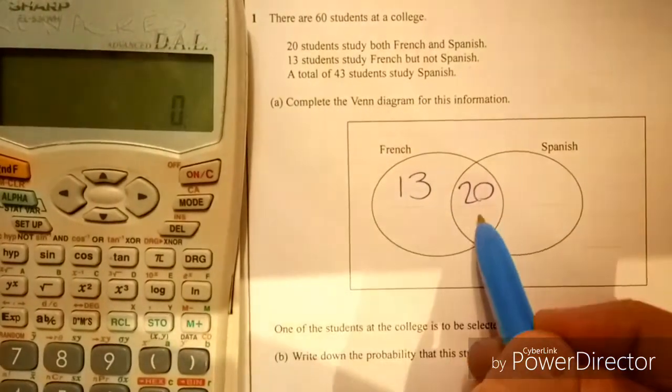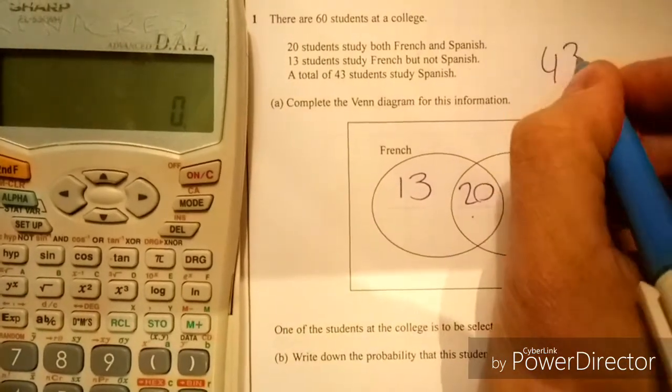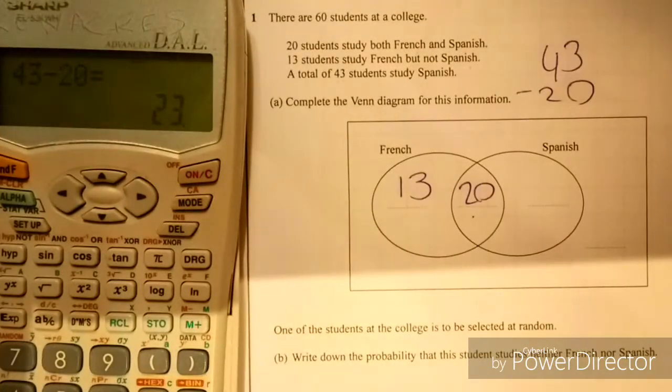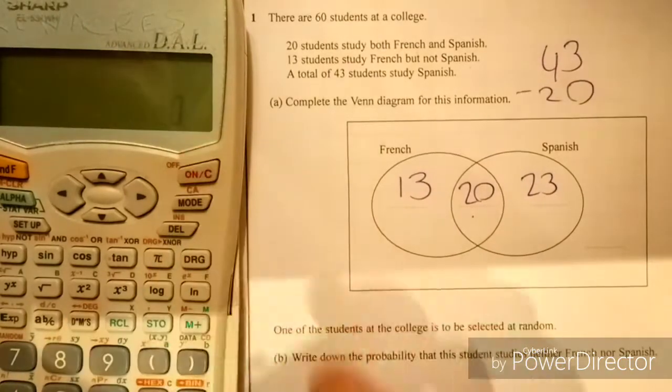Now this 43 is including that 20 as well, so we've got to do 43 minus 20. I'm just going to type it into the calculator since this is a calculator paper, which means here I've got 23.